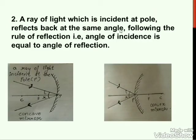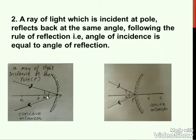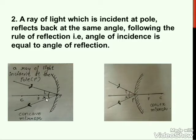Second rule: a ray of light incident on the pole reflects back at the same angle, following the rule of reflection. According to the laws of reflection, angle of incidence equals angle of reflection — you can see I and R here. So when an incident ray falls on the pole, it gets reflected with the same angle, following the laws of reflection.